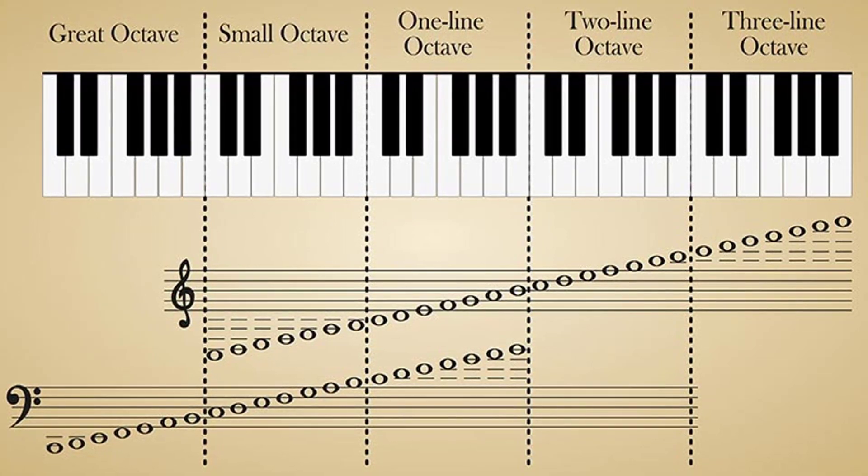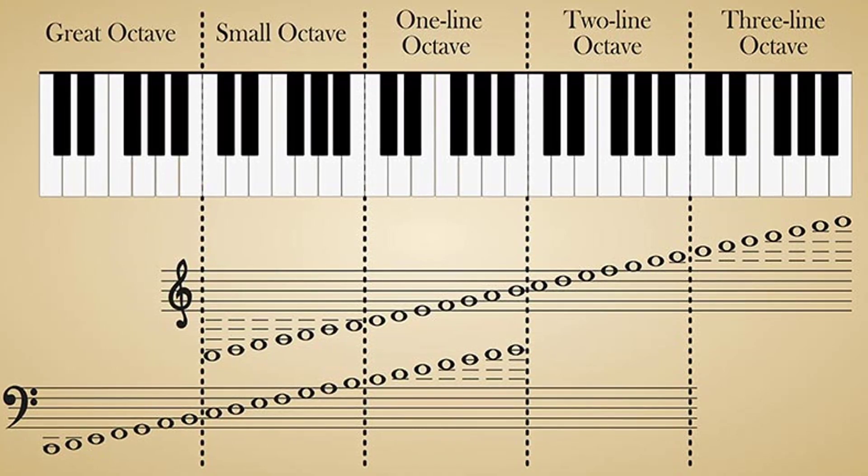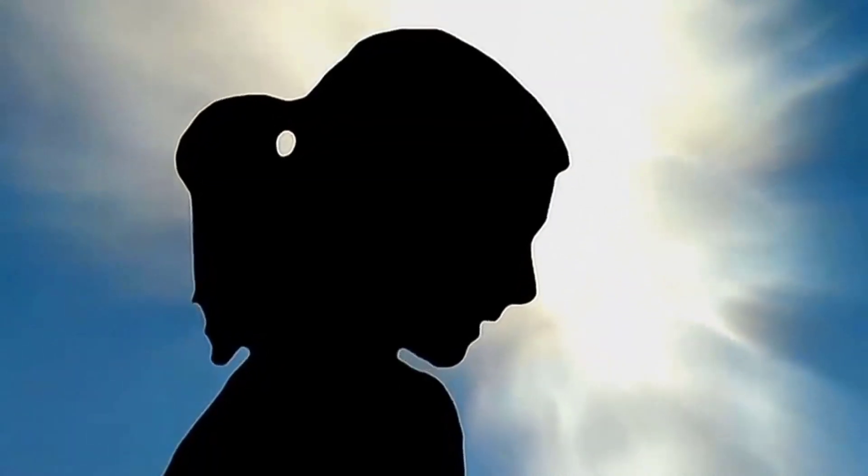Every note, whether A, B, C, D, E, F, or G, will be doubled in its value in the next octave. Since the octaves are continually doubling in their vibration, there are only a handful of octaves within the range of human hearing.